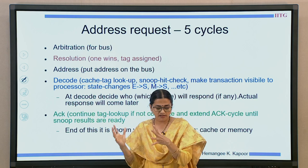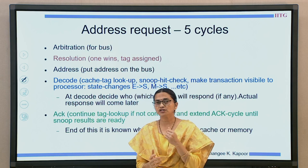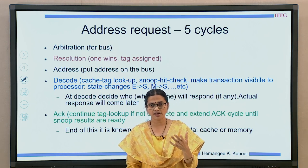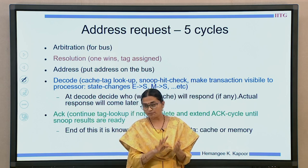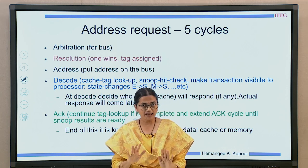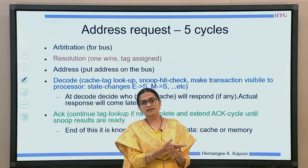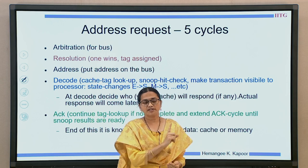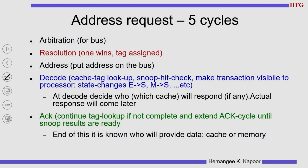In case some processor is busy processing the cache and not able to finish its snoop — because it is very ambitious to say you finished in one clock cycle — there is the fifth cycle. In the fifth cycle it probably finishes, or it can prolong the fifth cycle by not sending an acknowledgement onto the bus, saying it is taking more time, please wait and do not finish the request phase. The fifth cycle is elongated beyond five cycles until all processors finish the snoop. So the five cycles are: arbitrate, resolve, put the address, decode the address (during which all snoop information is ready and state changes are recorded), and the fifth cycle is the ACT cycle, which can be extended if the snoop is not finished.